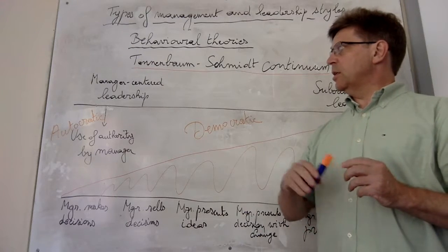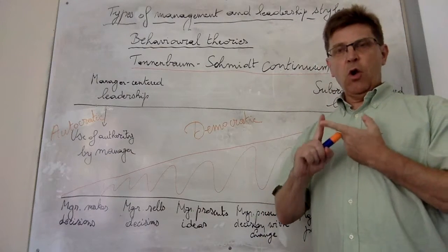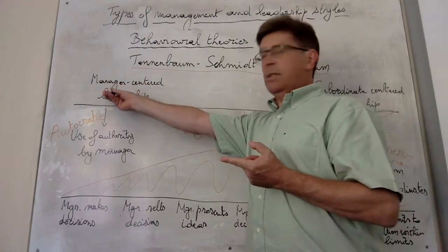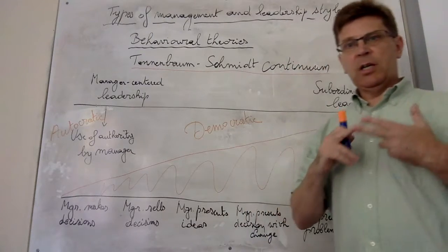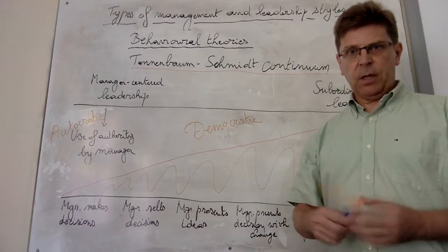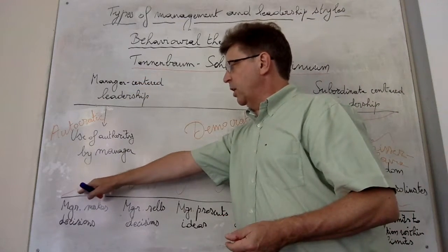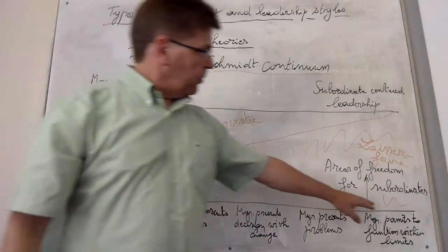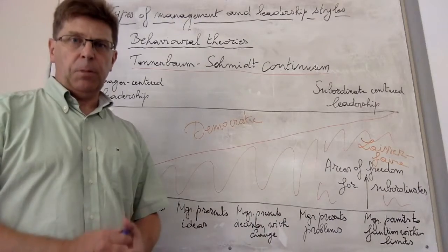Basically what we see here are two questions. First of all, who is making the decision - whether it would be more manager-led versus subordinate-led - and secondly, how much can the subordinate contribute to the decision and the decision-making process. Over here in the manager-centered leadership, you have very little contribution by the subordinates, while over here you have the subordinates almost making all the decisions and they have to ultimately come up with the decision.